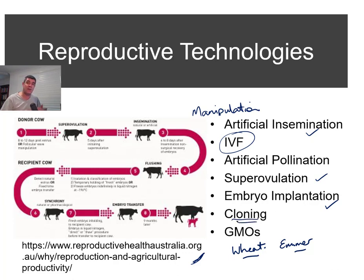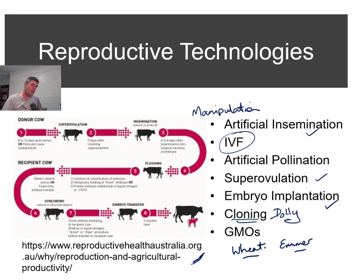Cloning is a relatively old technique. Dolly the sheep was the first cloned mammal — it's a great story but also a sad one. Our techniques for cloning are still not good. It's one of those things that we learned how to do but didn't really refine the technique much after that, because we haven't really been able to perfect it.